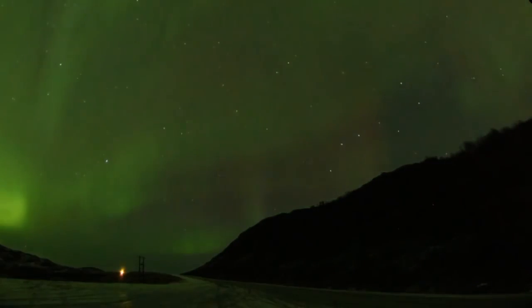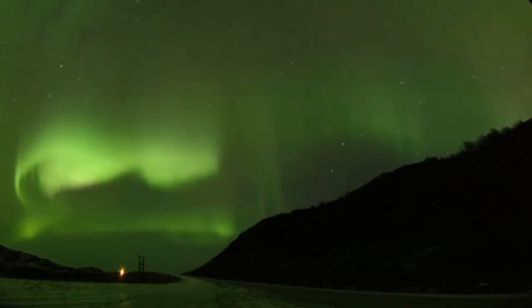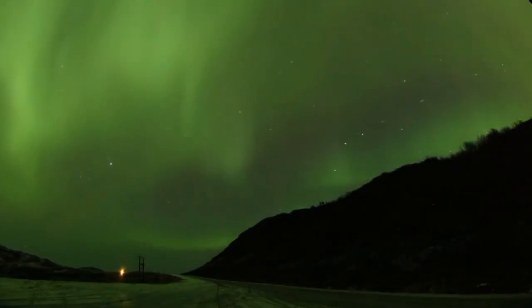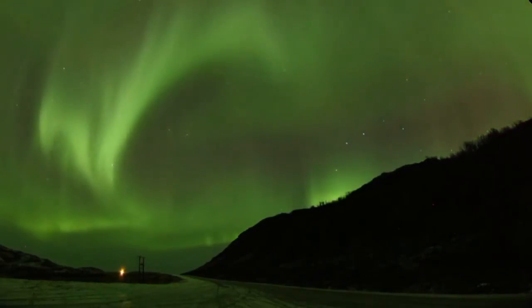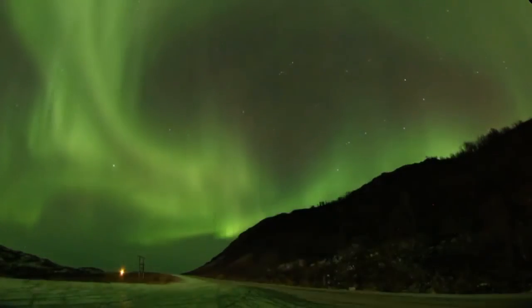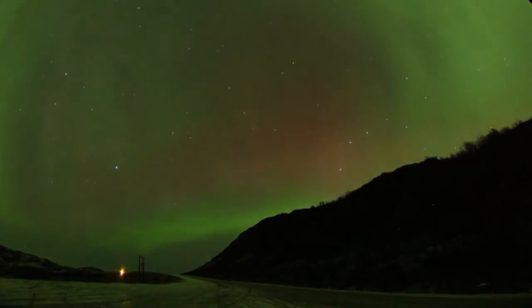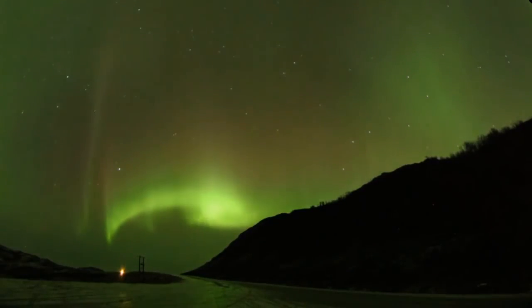Auroral rays follow the lines of force in Earth's magnetic field. Oxygen atoms emit a green light when hit by high-energy electrons. Low-energy electrons, higher in the atmosphere, cause oxygen atoms to glow red, giving the green aurora its red tip.